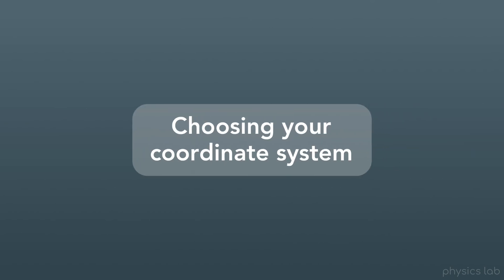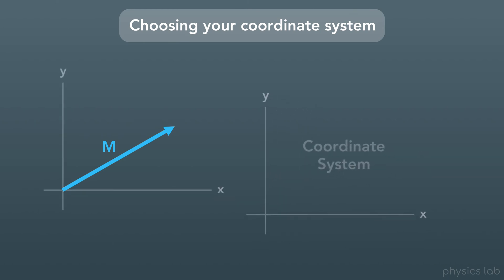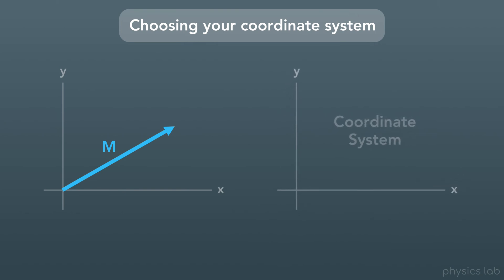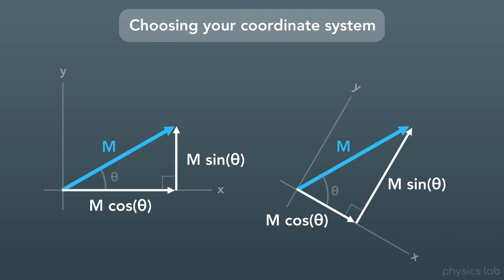So the last thing we'll talk about is choosing your coordinate system when setting up a problem and finding the vector components. Let's say we're given this vector with the magnitude of m. We could choose to set up a coordinate system like this — the coordinate system is just how we choose to position and orient the x and y axes. Using this coordinate system, the components for this vector would look like this: one is parallel to the x axis, and the other is parallel to the y axis. Now, let's say we're given the exact same vector, but we choose a rotated coordinate system. The same vector would have components that look like this — just like before, one is parallel to the x axis and the other is parallel to the y axis. These components look different than the ones on the left, but they create the exact same vector.